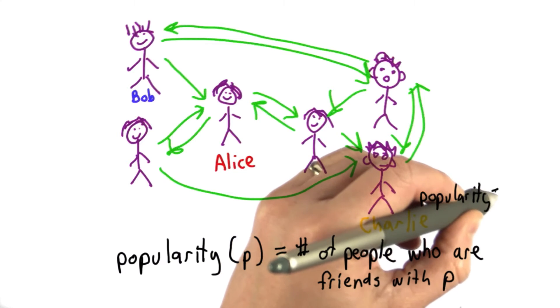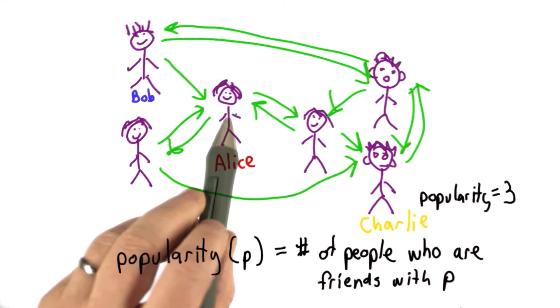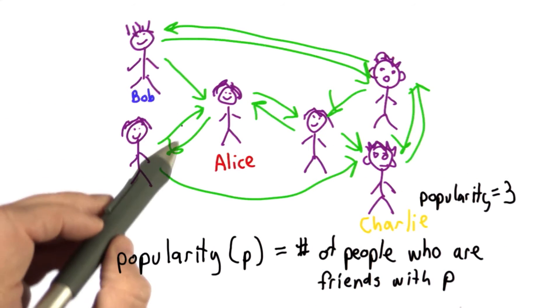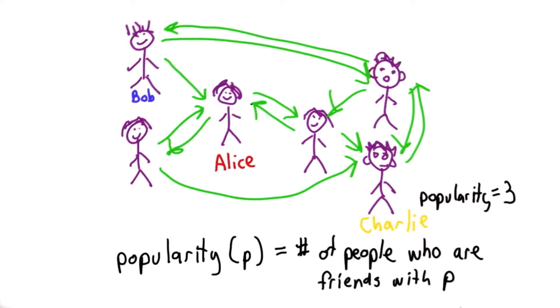So there are one, two, three links into Charlie. So Charlie's popularity score would be three. Alice also has three links, so her popularity score would also be three.